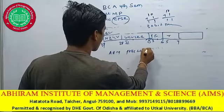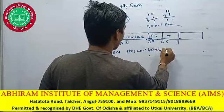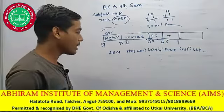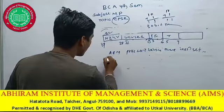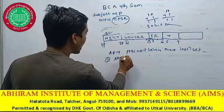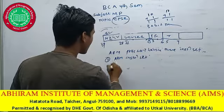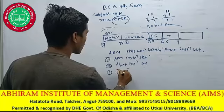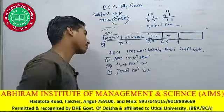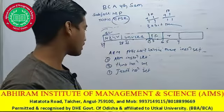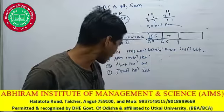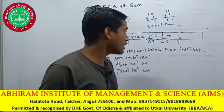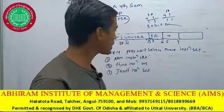Our processor is having three instruction sets. One is your ARM Instruction Set, another is your Thumb Instruction Set, and the third one is your Jazelle (J) Instruction Set. So, ARM processor is having three instruction sets: ARM Instruction Set, Thumb Instruction Set, and Jazelle Instruction Set.